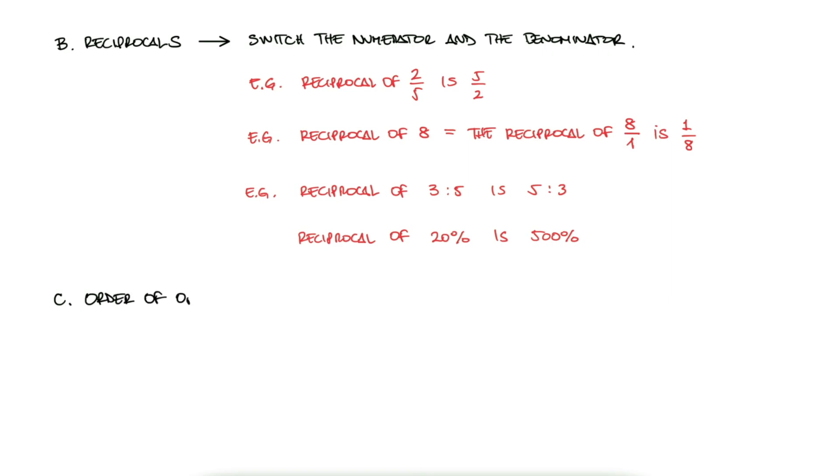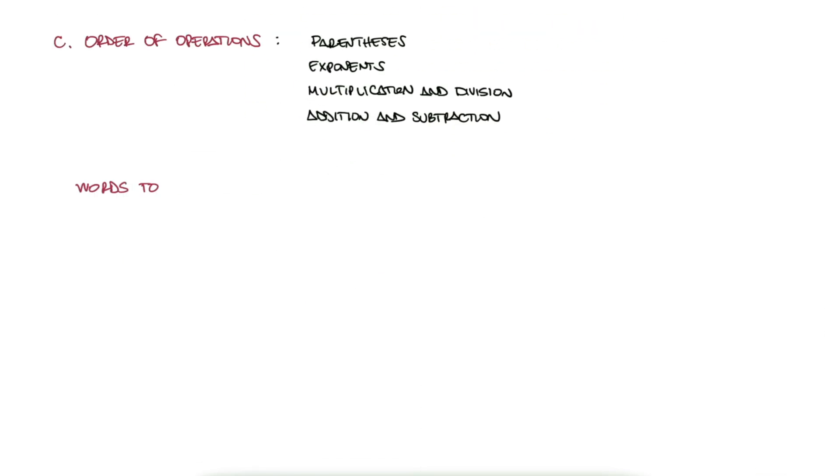The general order of operations is obviously important. We want to remember that we do parentheses, then exponents, then multiplication and division from left to right, and then addition and subtraction from left to right. But this here refers more to how to translate percentages or fractions word problems to equations.